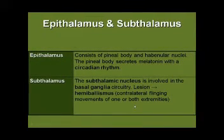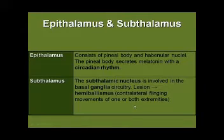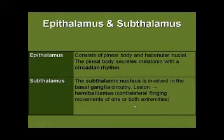The smallest components of the diencephalon are the epithalamus and the subthalamus. The epithalamus is a term that includes, among other things, the pineal gland and the functionally not well understood habenular nuclei.